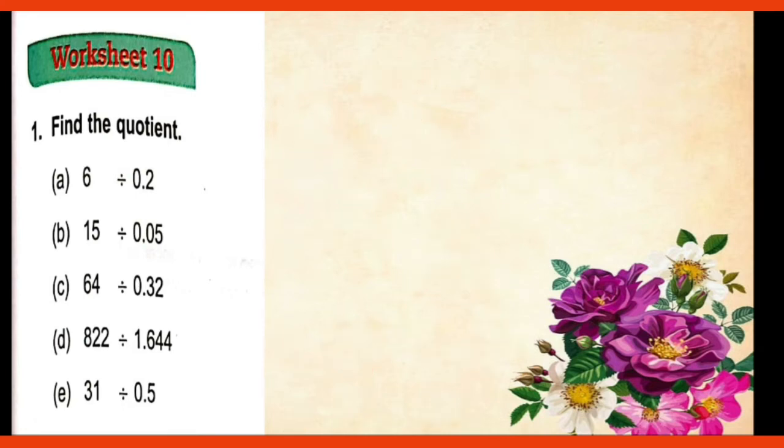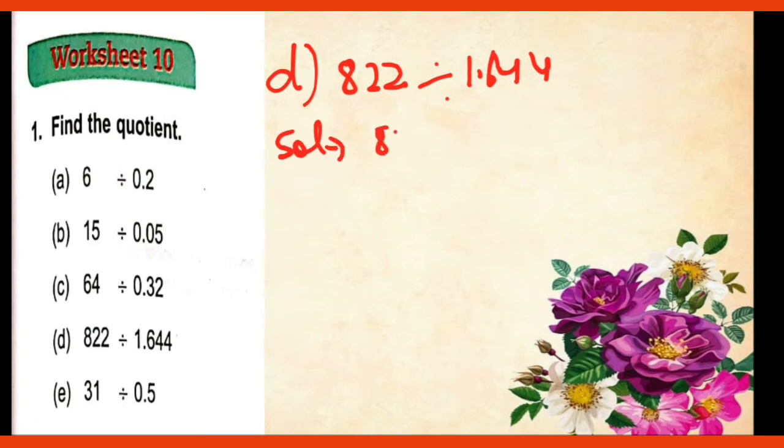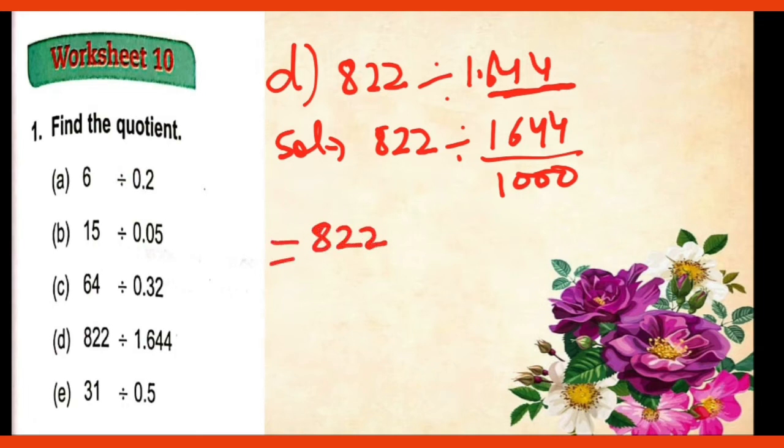So now we will do the part 822 divided by 1.644. So what we will do? 822 divided by 1.644 upon 1,000. As you can see here 3 digits in decimal part. Okay. So upon 1,000. So we will do 822 multiplied by 1,000 upon 1,644.